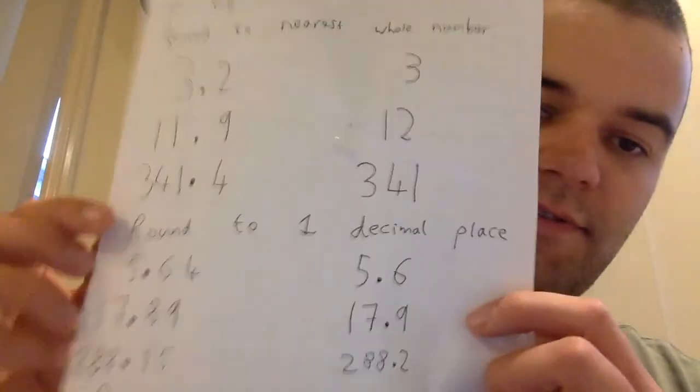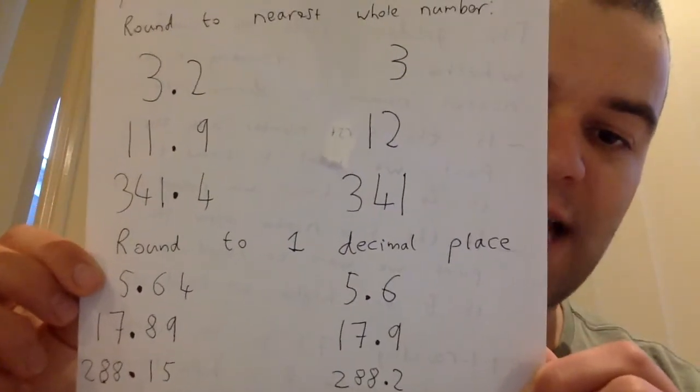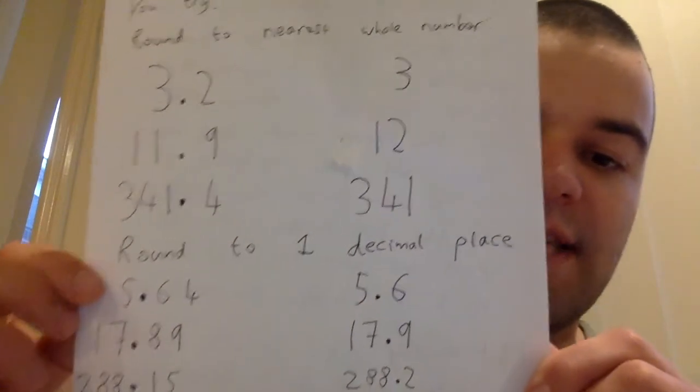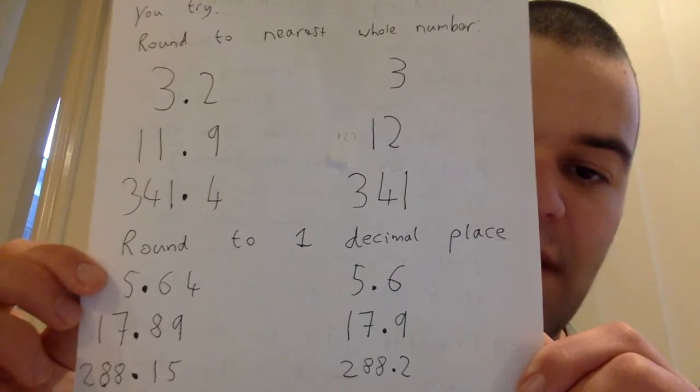So for the first one, 5.64. 4 means we round down, so it stays as 5.6. For the next one, 17.89. 9 means we round up, so that 0.8 becomes 0.9.